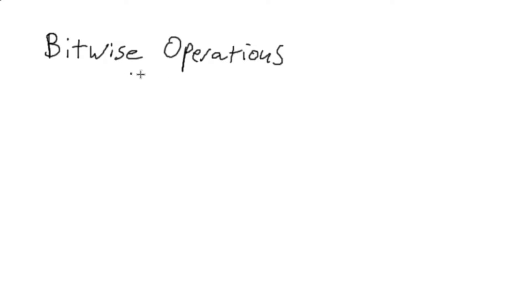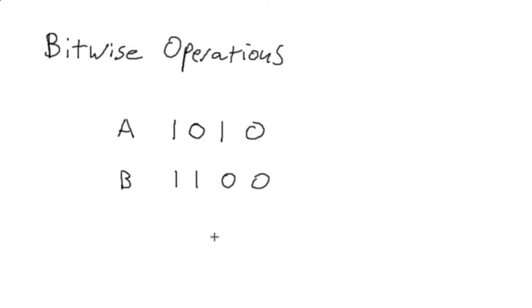On a surface level, bitwise operations don't sound too terribly useful. In fact, they sound downright useless. But if you'll just give me a second here, I can actually show you that there is a use to bitwise operations. So first things first, how do bitwise operations work?